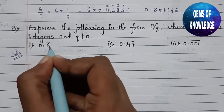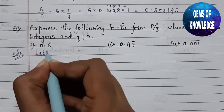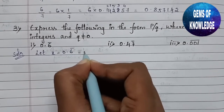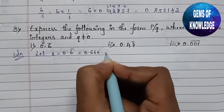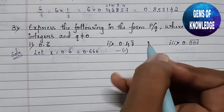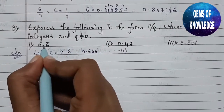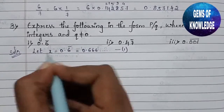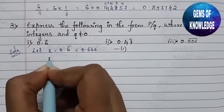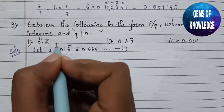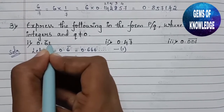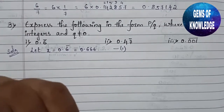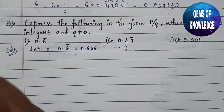Let us solve the first question: 0.6 with a bar. Let x equal 0.666... and so on — let this be equation 1. As you can see, after the decimal point only one number is present, so we are going to multiply equation 1 by 10. We take only 10 because after the point there is only one number — we multiply by the smallest one-digit power of 10.